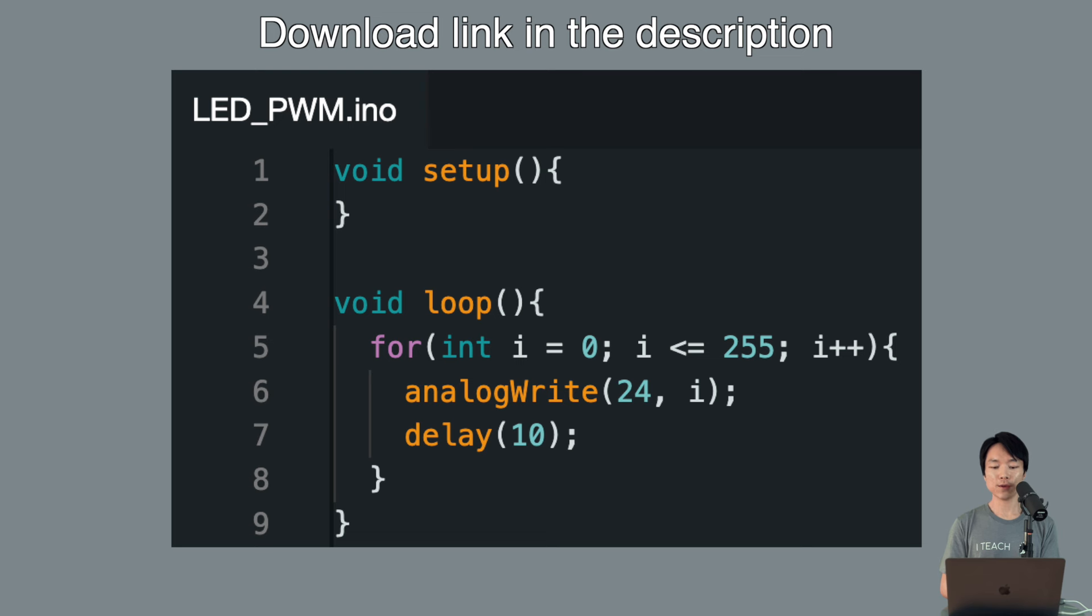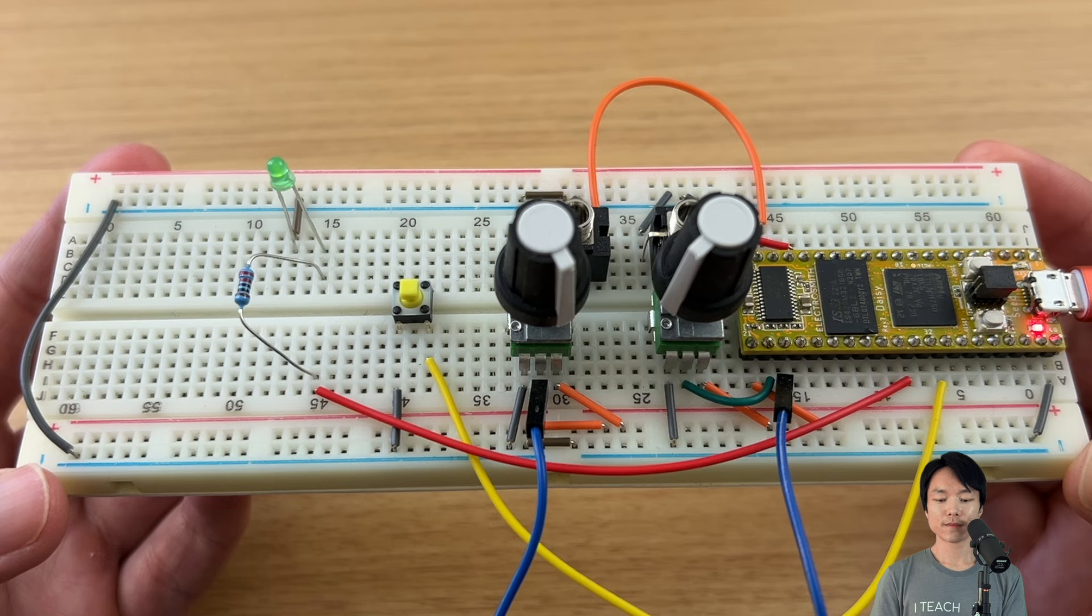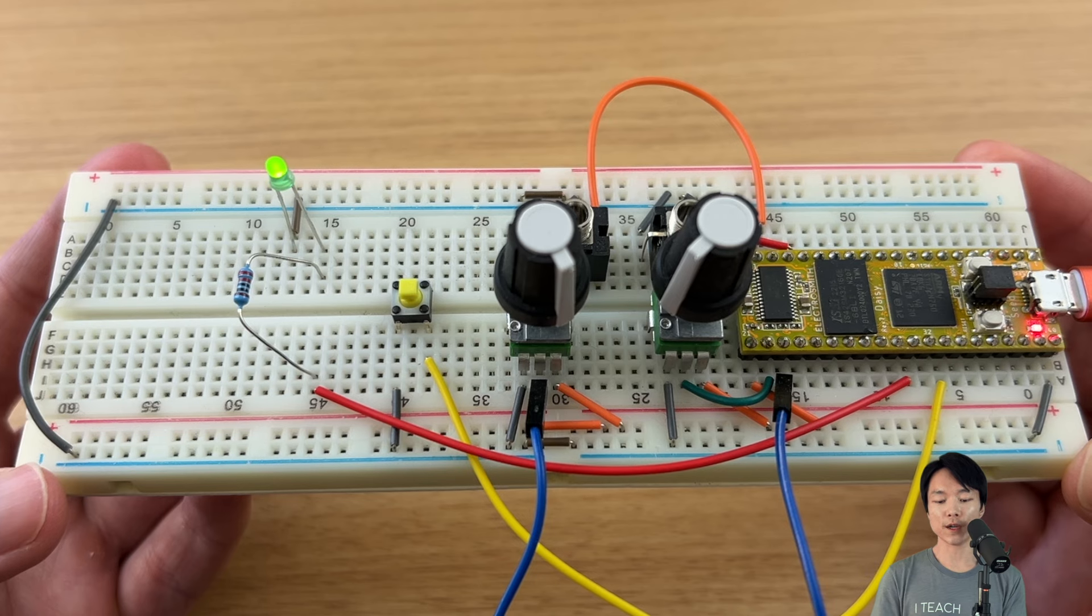Here's the code for PWM output. All we need to do is to use the analogWrite function to output a PWM signal. 24 is the pin number. And we're using a for loop where the variable i will increase from 0 to 255 over time. It increments by 1 every 10 milliseconds. So, pin 24 will output voltages from 0.0V to 3.3V in about 2.5 seconds. Let's flash and see the LED glow brighter over time.